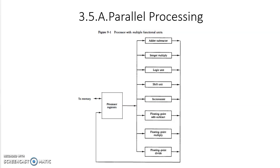Welcome to the next topic: parallel processing. Parallel processing is simultaneous data processing and concurrent execution of instructions. The purpose of parallel processing is to speed up and increase the throughput — the amount of processing that can be accomplished during a given interval of time. In order to increase this throughput, the amount of hardware required will be increased, which increases the cost of the system.